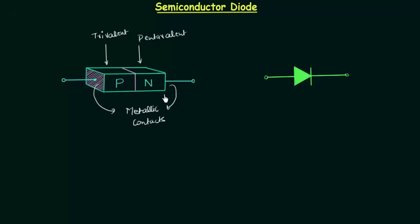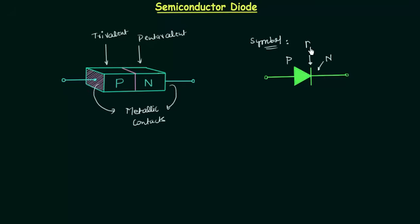We have already completed all three bias conditions and now we will see how the diode is represented in a circuit — that is, the symbol of a PN junction diode. We apply external voltage across its two terminals. This side is P, this side is N, and this vertical line is the depletion layer.